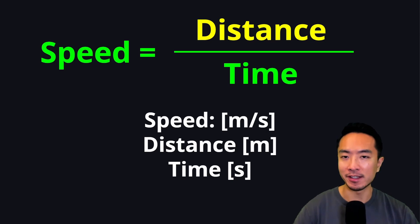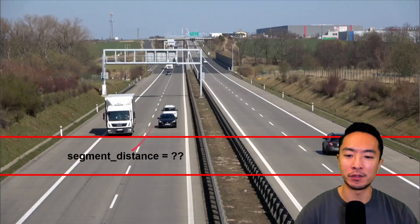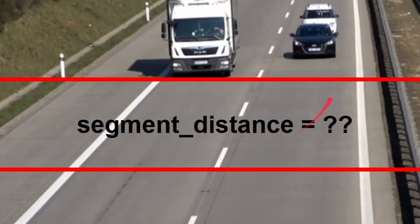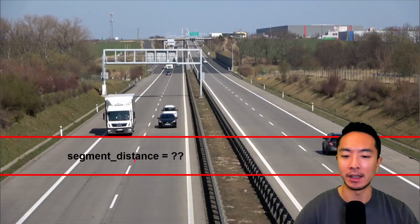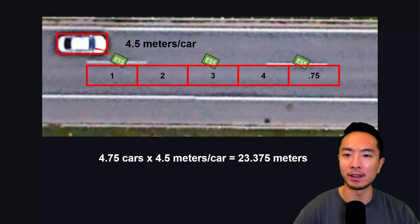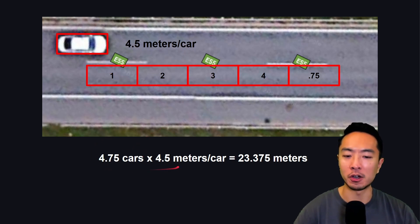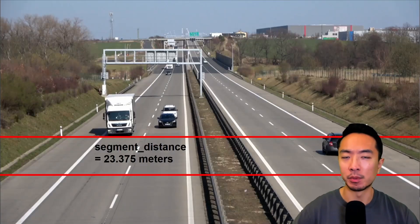We're going to focus on the distance part of the speed equation first. We're trying to find the segment distance, which is the distance between these two red lines. I chose a section of the picture with two white dashes and two blank spaces as my segment. The average car length of a sedan is 4.5 meters. I roughly estimated this to be 4.75 cars, giving us an average of 23.375 meters. This is a rough estimate — if you know the exact distance, your measurement will be much more accurate.